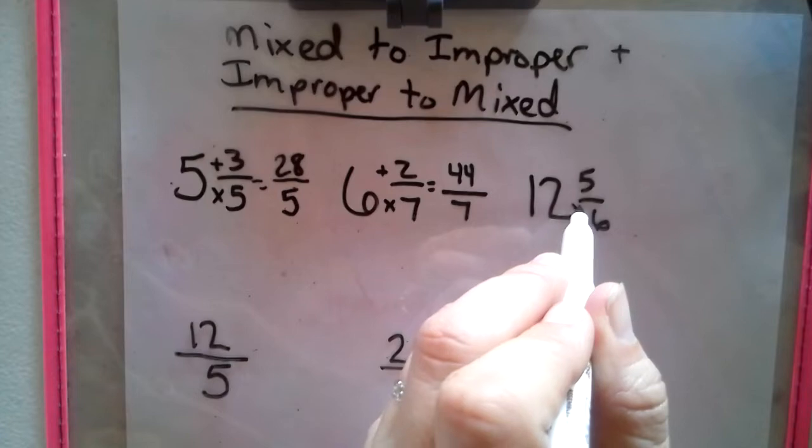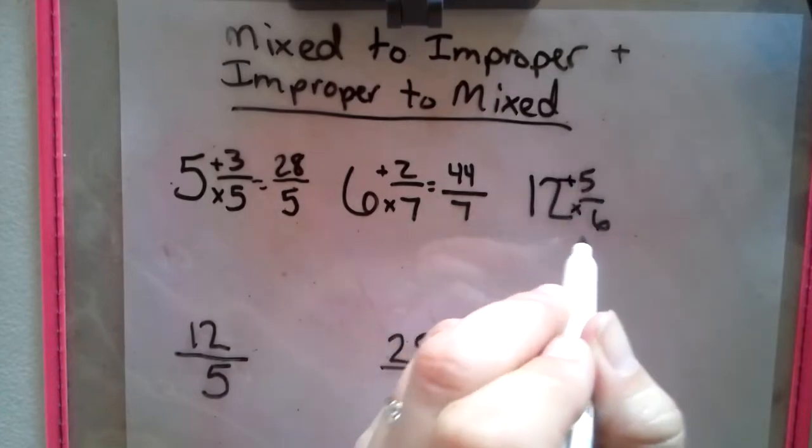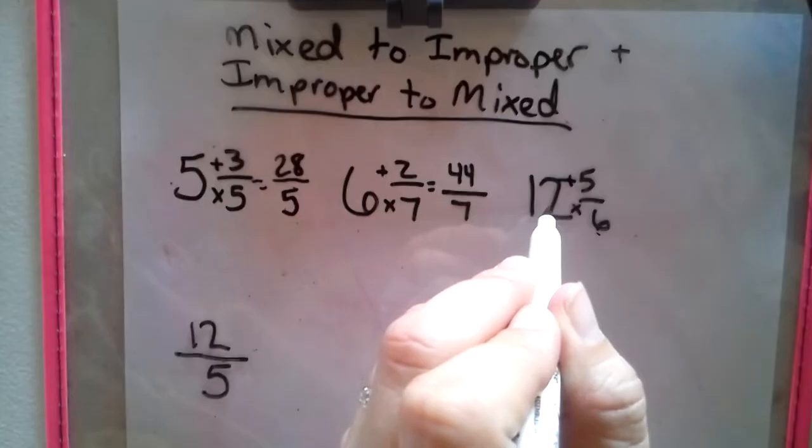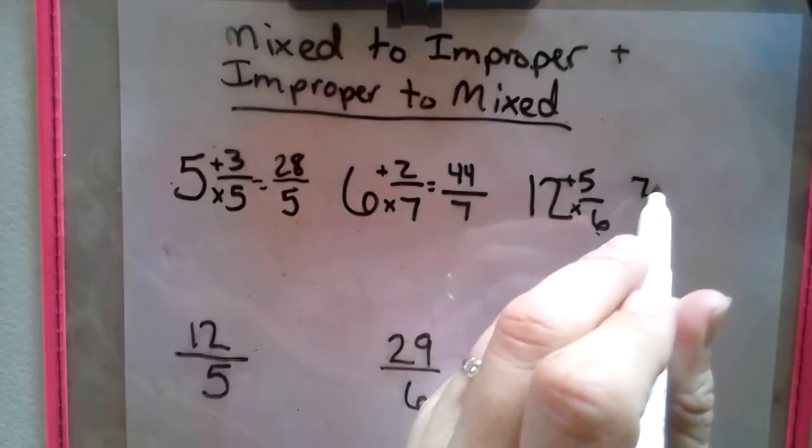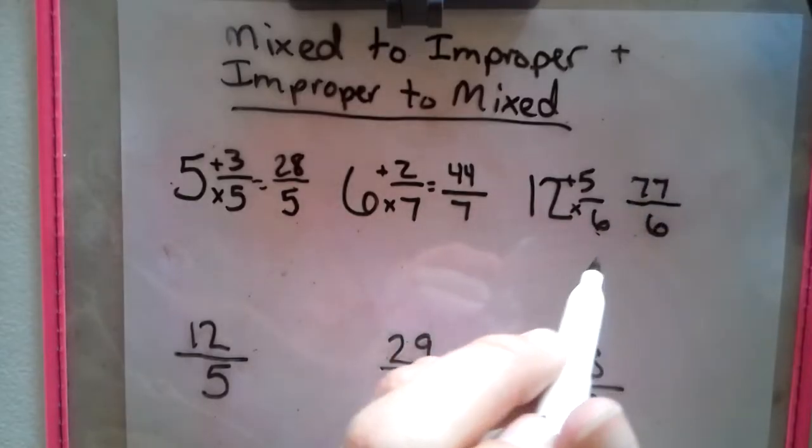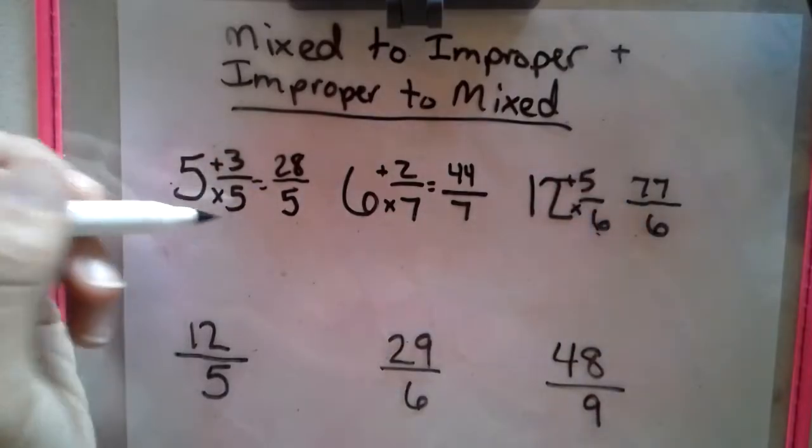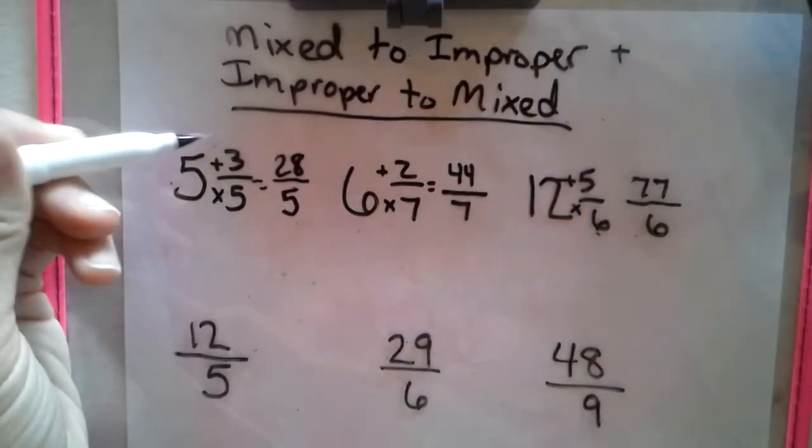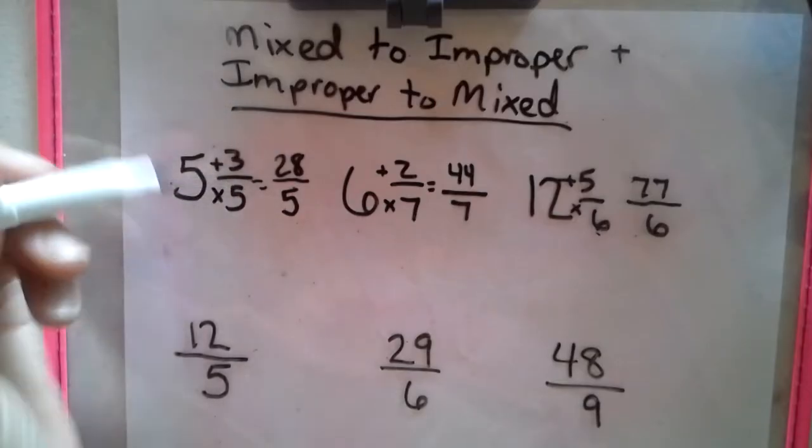Denominator times the whole number, add the numerator. So we got 72, 75, 76, 77 over the original denominator. Another way to look at this is we could say bottom times the side, add the top, and put it all back over the bottom. So that's little kid language.